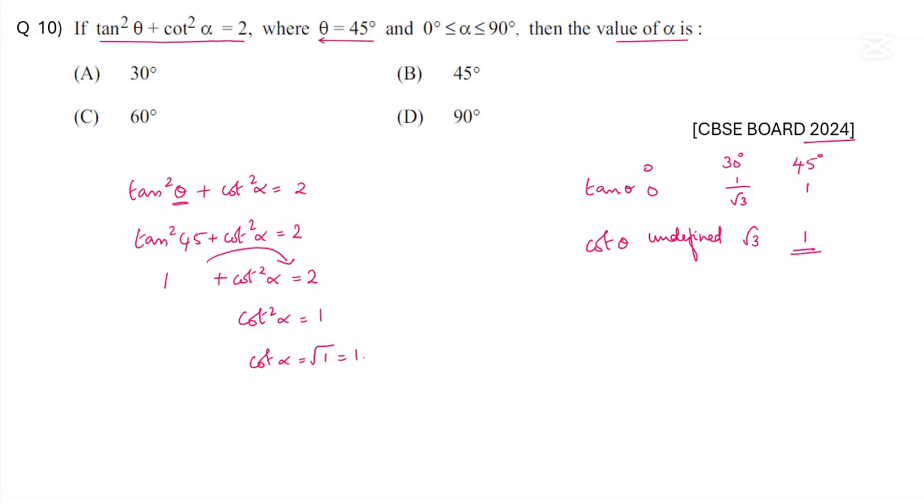So we got cot becomes 1 when the angle is 45 degrees. So here cot 45° is 1, therefore α is 45 degrees. It is option B, 45 degrees. Thank you.